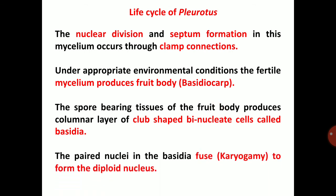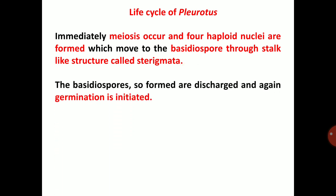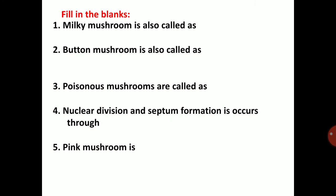The spore-bearing tissues of the fruiting body produce a columnar layer of club-shaped binucleate cells called basidia. The paired nuclei in the basidia fuse to form the diploid nucleus — karyogamy, also called diploidization. Immediately, meiosis occurs and four haploid nuclei are formed, which move to the basidiospores through stalk-like structures called sterigmata. The basidiospores formed are discharged and germination is initiated again.